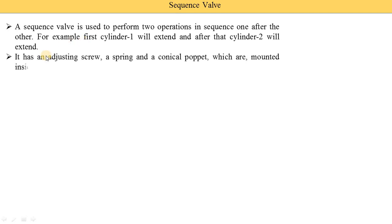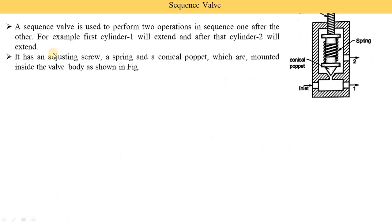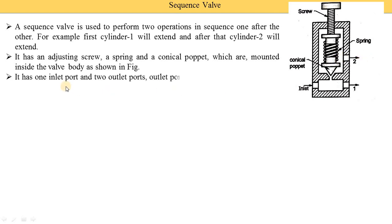It has an adjusting screw, a spring, and a conical poppet which are mounted inside the valve body as shown in the figure. In the sequence valve image, you can see the adjusting screw, the spring, and the conical poppet. The sequence valve has one inlet and two outlet ports. Outlet port one is connected with cylinder one and outlet port two is connected with cylinder two.